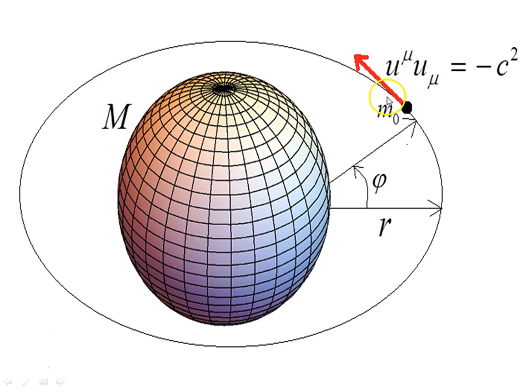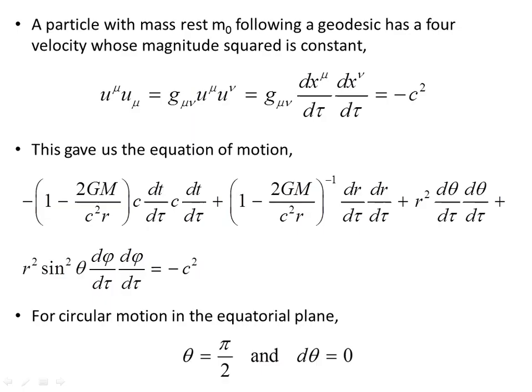The 4-velocity is parallel transported — the tangent vector here is parallel transported around the orbit, and this is a geodesic. A geodesic is the motion of a particle responding only to the gravitational field, freely falling within that field, and the motion of a freely falling object in the gravitational field is a geodesic. A particle with rest mass m₀ following a geodesic has a 4-velocity whose magnitude squared is constant.